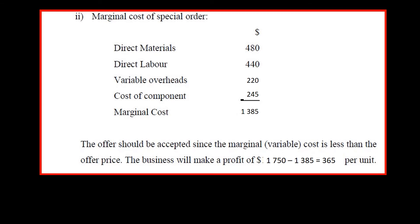The marginal cost of the special order would be the variable cost of producing it plus the cost of the component, giving a total marginal cost of $13.85. The offer should be accepted since the marginal variable cost is less than the offer price of $17.50. The business will make a profit of $17.50 minus $13.85, equaling $3.65 per unit.